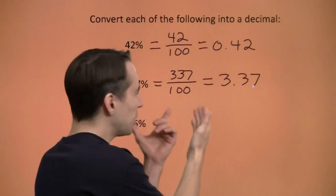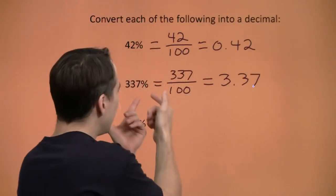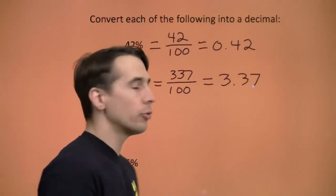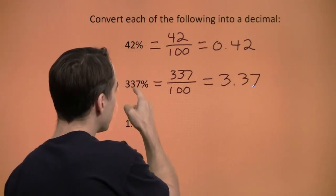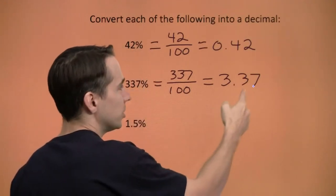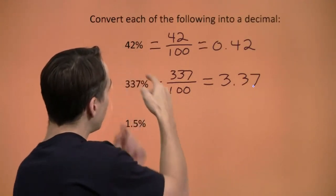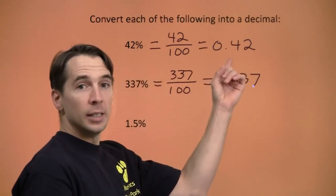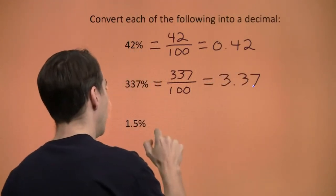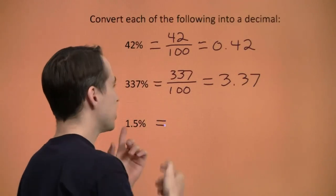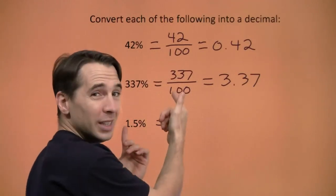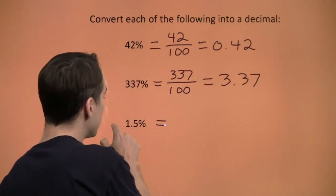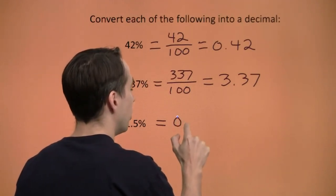Now you start to see we don't really need the middle step. The percent symbol just means divide by 100. Divide by 100, move the decimal point two places to the left — you get 3.37 up here, and 0.42 down there. For 1.5 percent, move the decimal point two places to the left and you get 0.015.